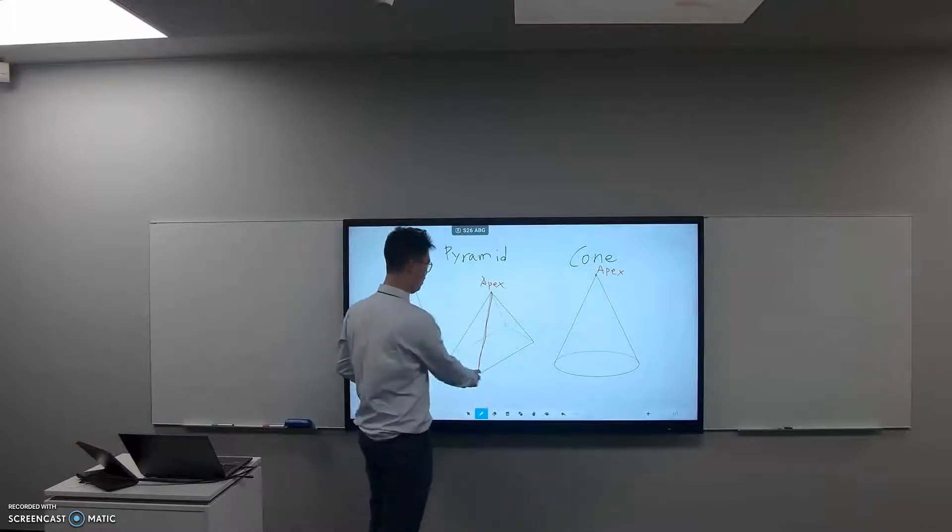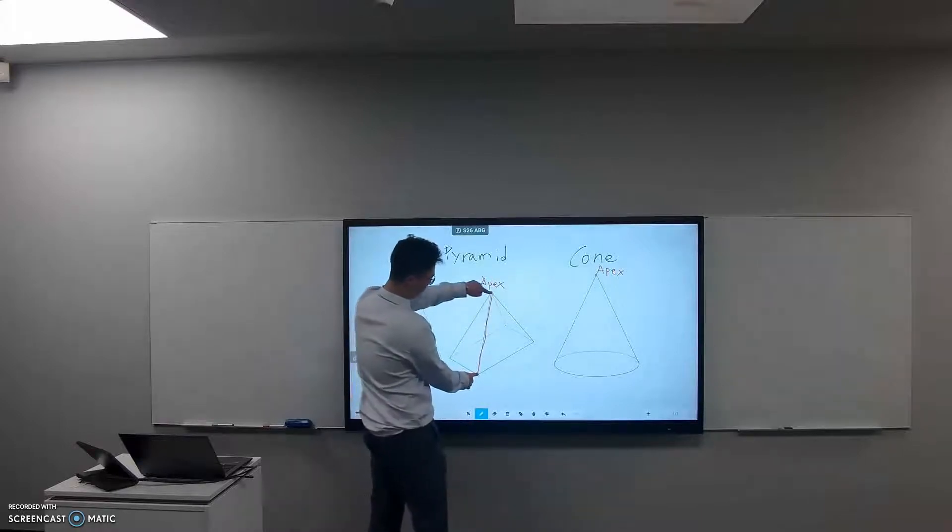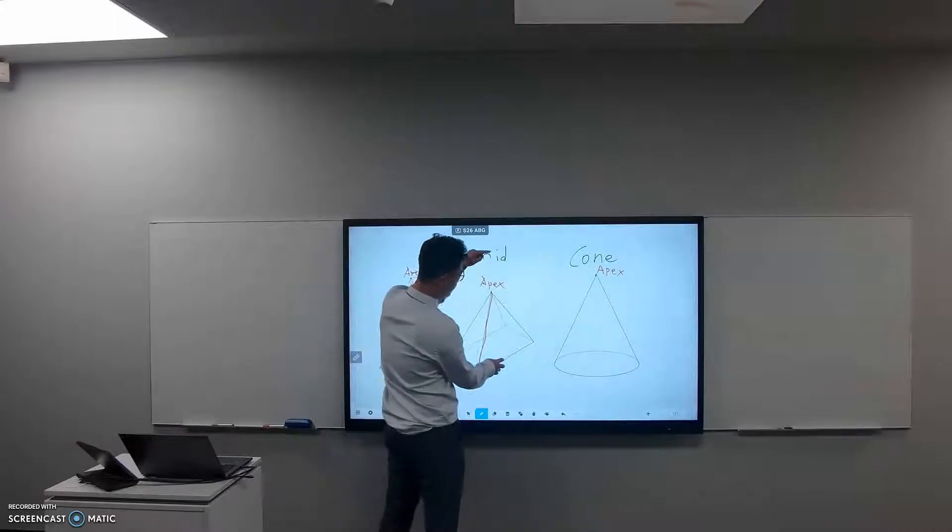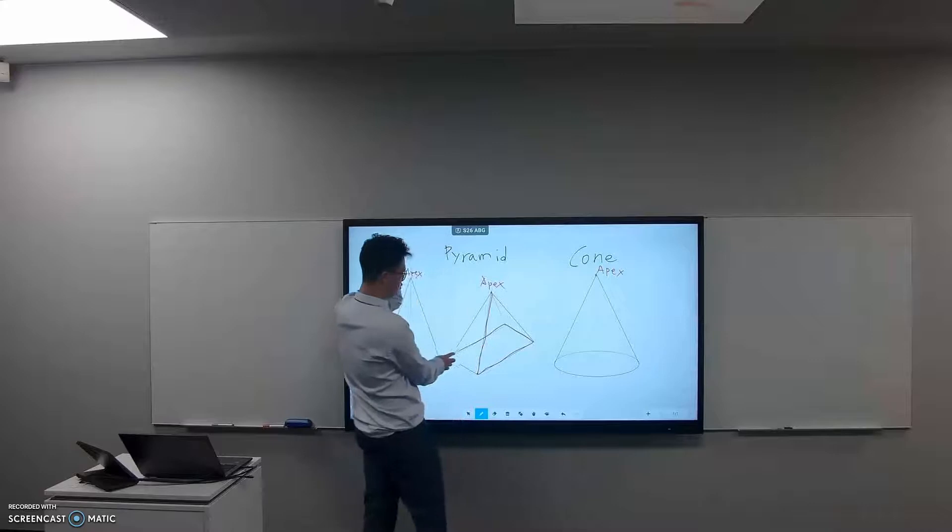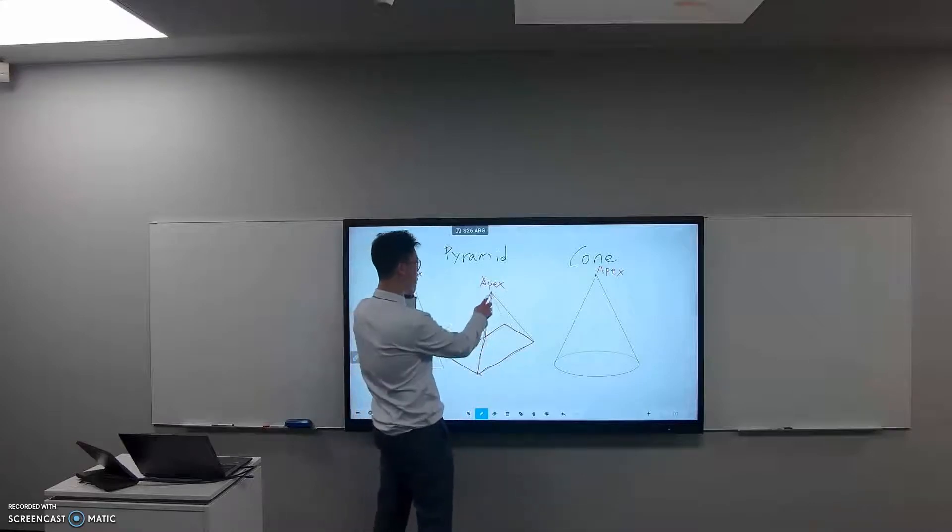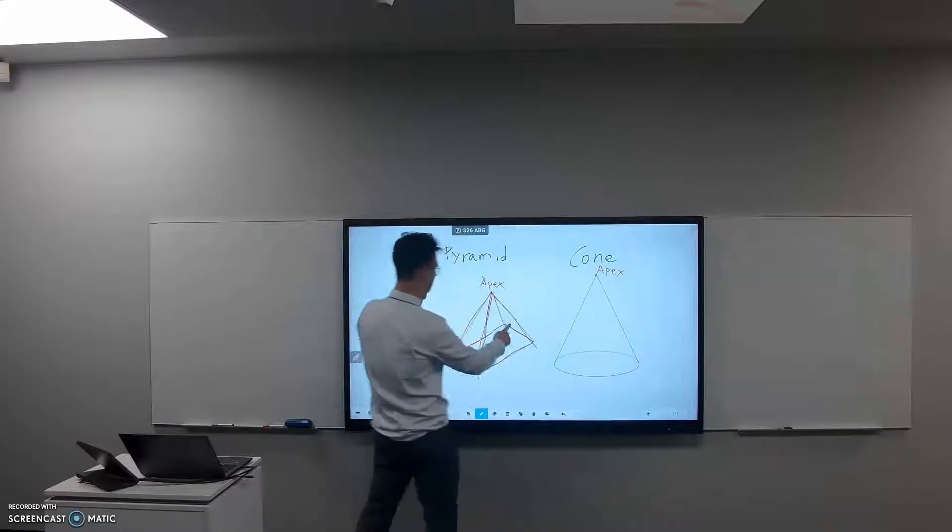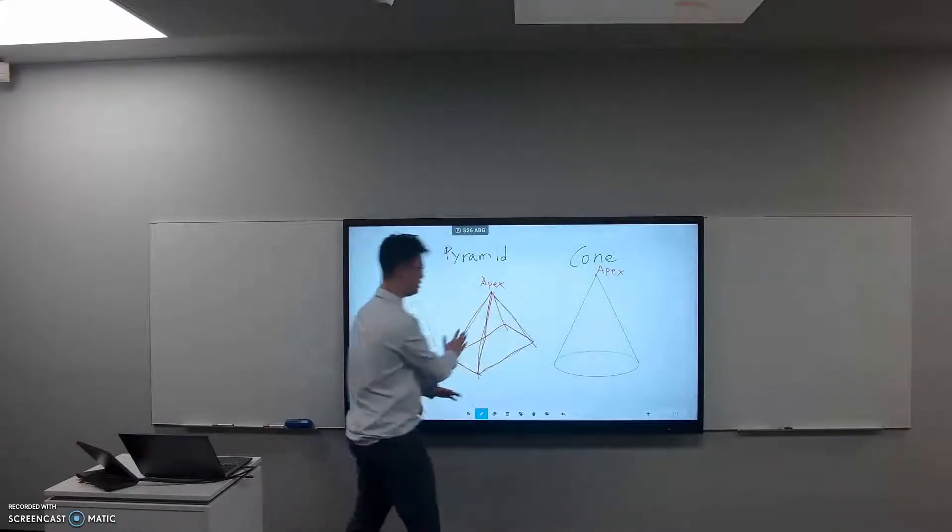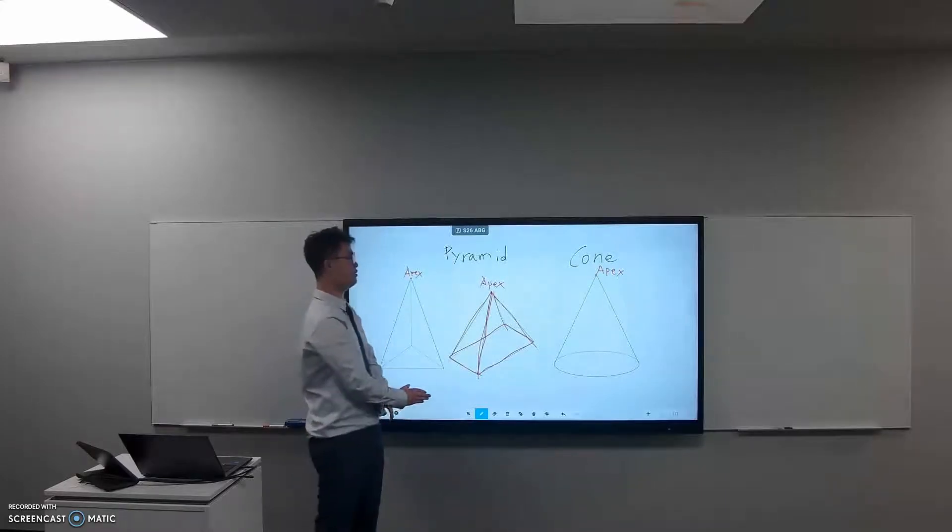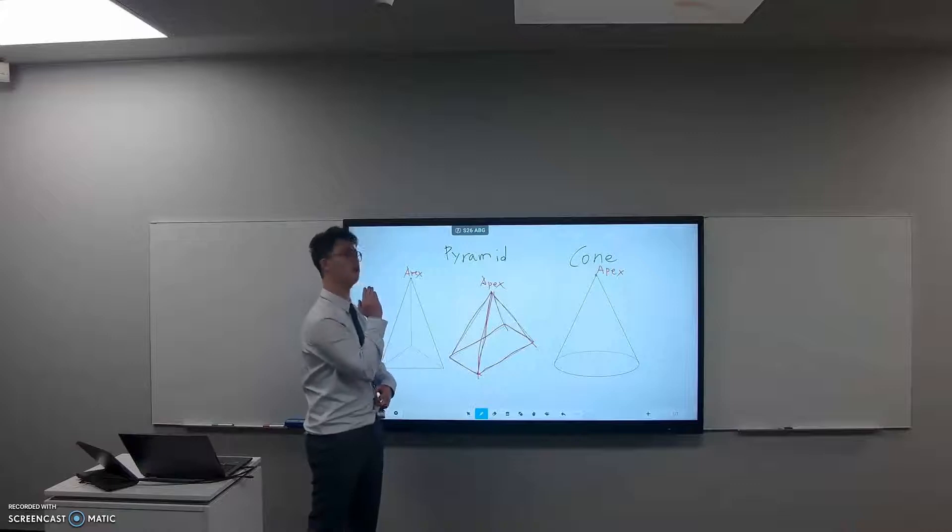And then this line from the apex just goes and traces this base shape. So it forms sides like this. All the sides form due to this tracing process, and then this type of three-dimensional object is called a pyramid.